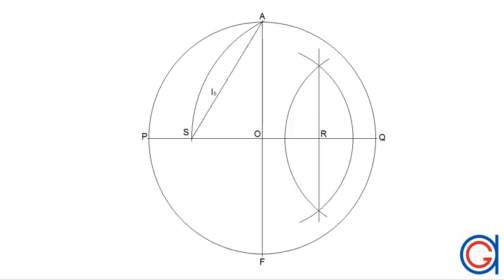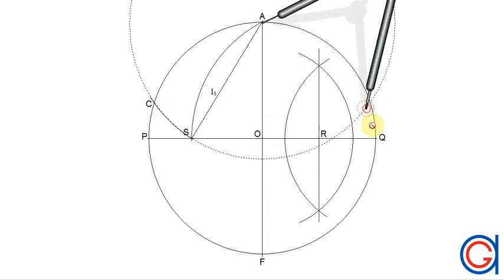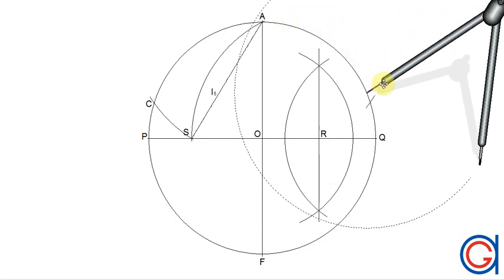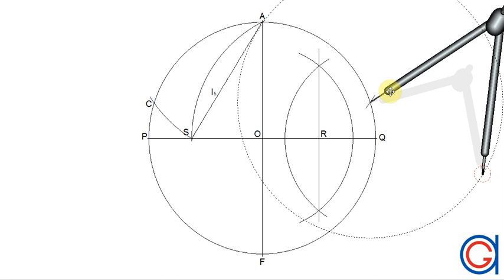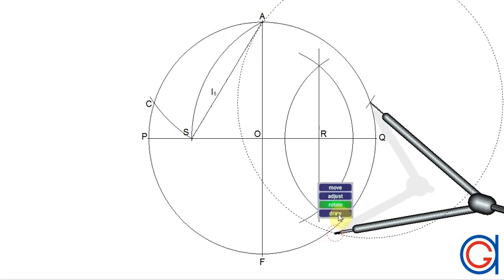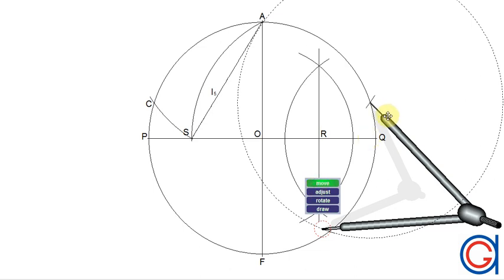The next step is, with our compass set to the length L5 and centered on the point A, we scribe an arc to the left cutting our circumference at point C, as can be seen here in the video. Now with our compass set to the length AC and set on point A, we scribe a new arc to the right. Setting our compass on this previously scribed arc, we scribe another arc below, as can be seen here.